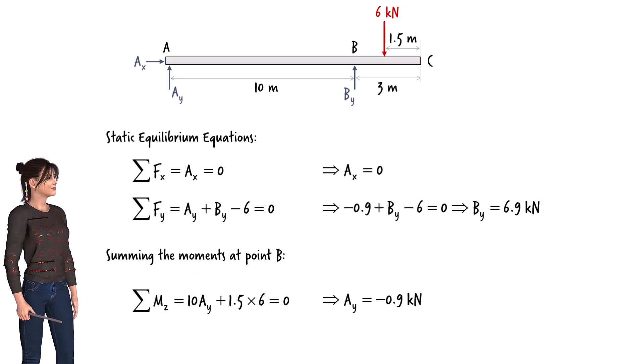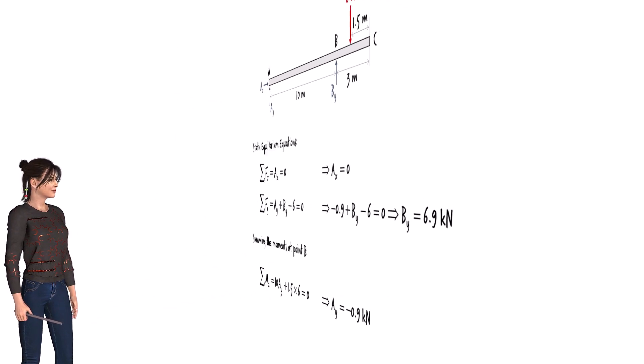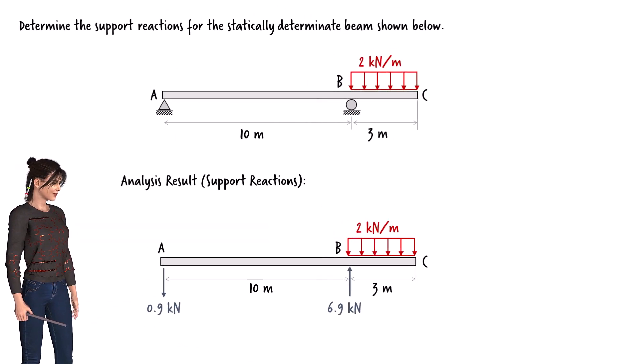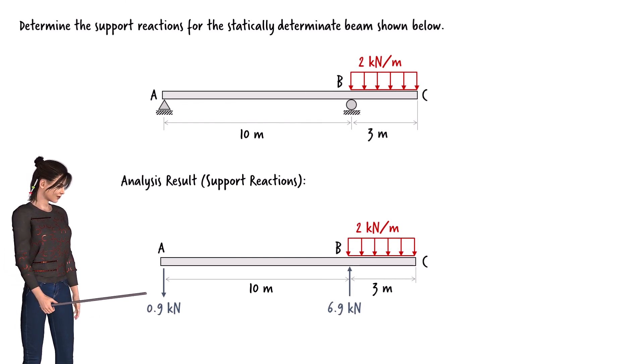We can represent the analysis results graphically by showing the calculated support reactions on the free body diagram. Since Ay was determined to be negative 0.9 kN, we have flipped the direction of the force arrow and written positive 0.9 kN as its magnitude.